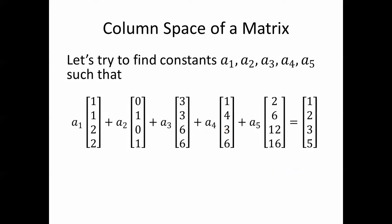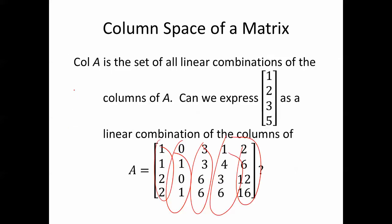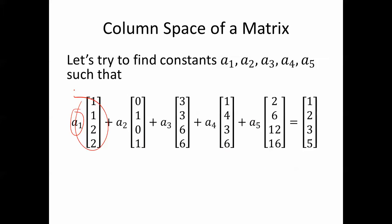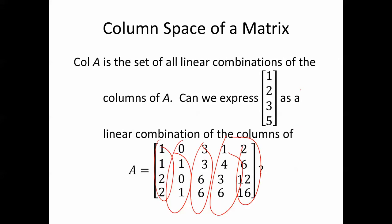We need to find constants A1, A2, A3, A4, A5 such that A1 times the first column (1, 1, 2, 2), plus A2 times the second column, plus A3 times the third column, plus A4 times the fourth column, plus A5 times the fifth column equals (1, 2, 3, 5). In other words, we're trying to express (1, 2, 3, 5) as a linear combination of the columns of A.